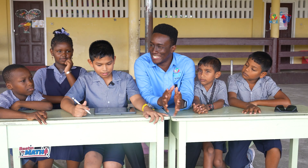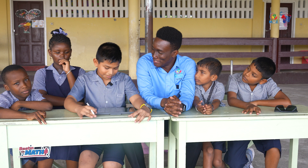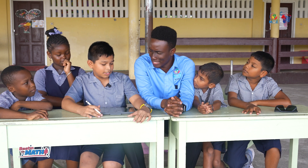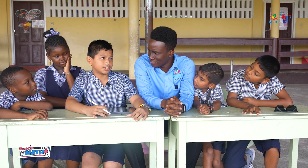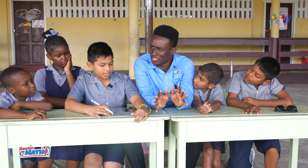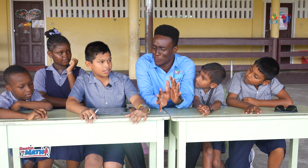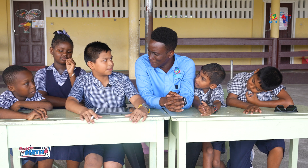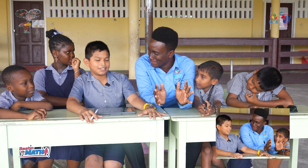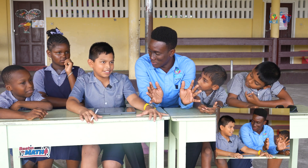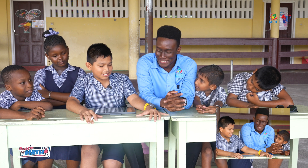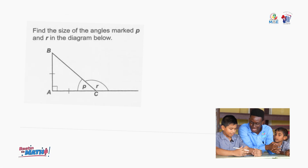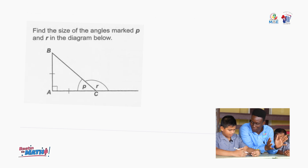So we have our next guest here with us today. What is your name? Nickel. Nickel, which class are you in? I'm in grade 6. So you're writing the national grade 6 assessment in a few weeks. What do you think — will you beat the maths or will the maths beat you? I'll beat the maths. Very bad. Maths doesn't stand a chance with you. So your question is: find the size of the angles marked P and R in the diagram below. The floor is yours.